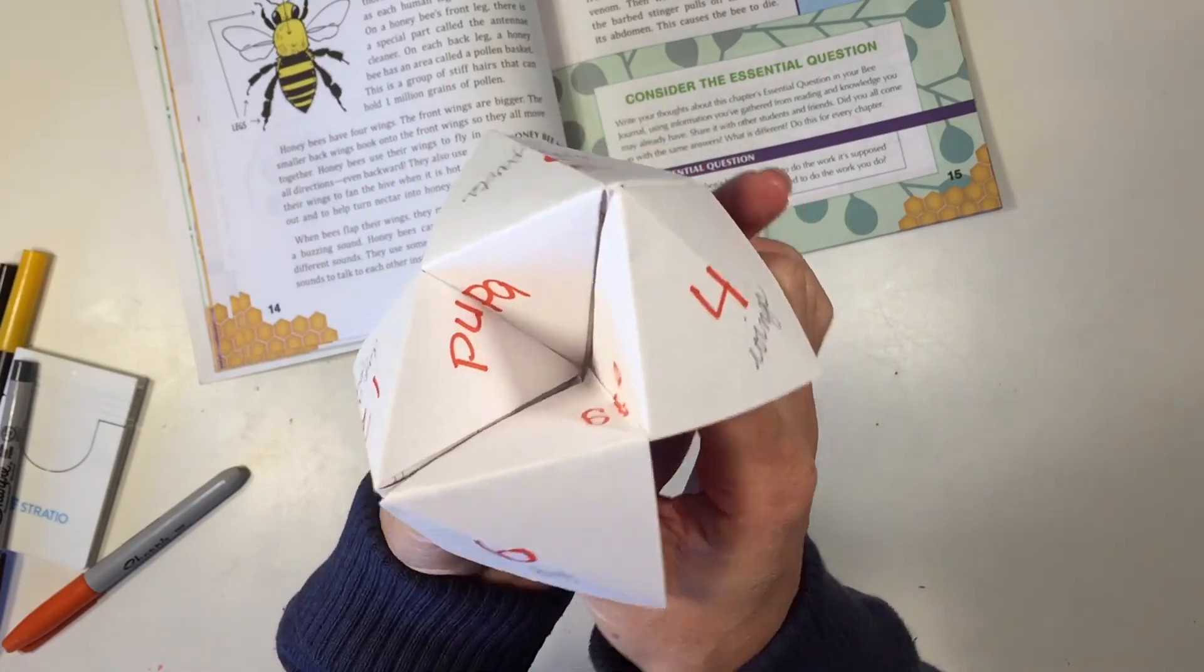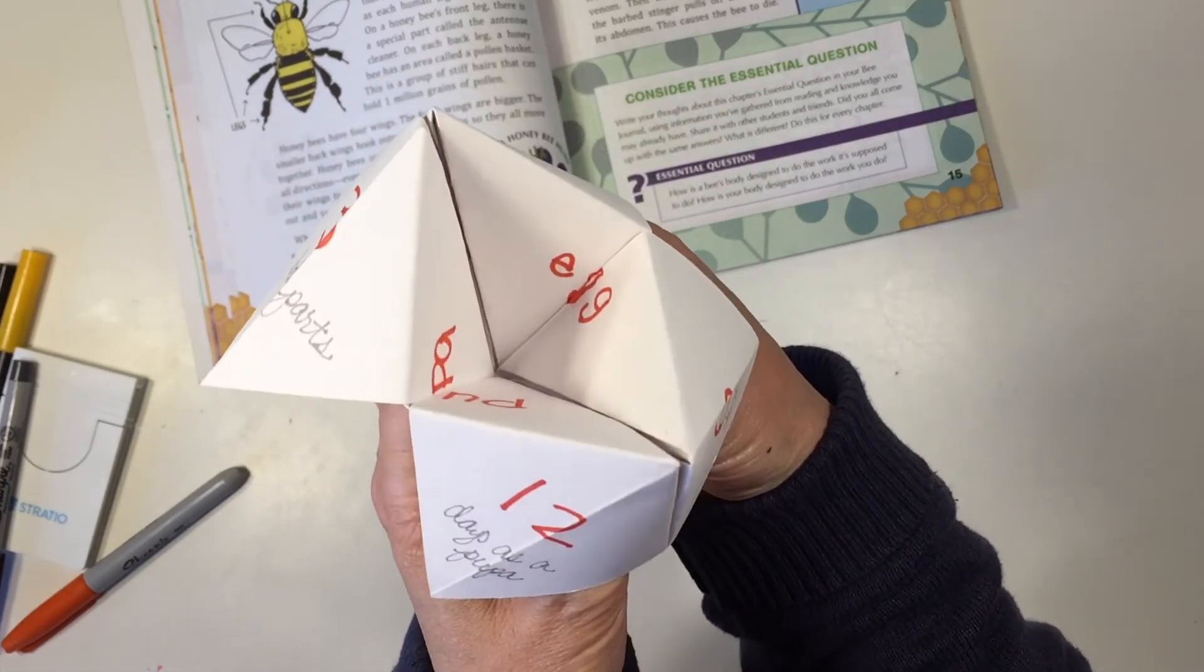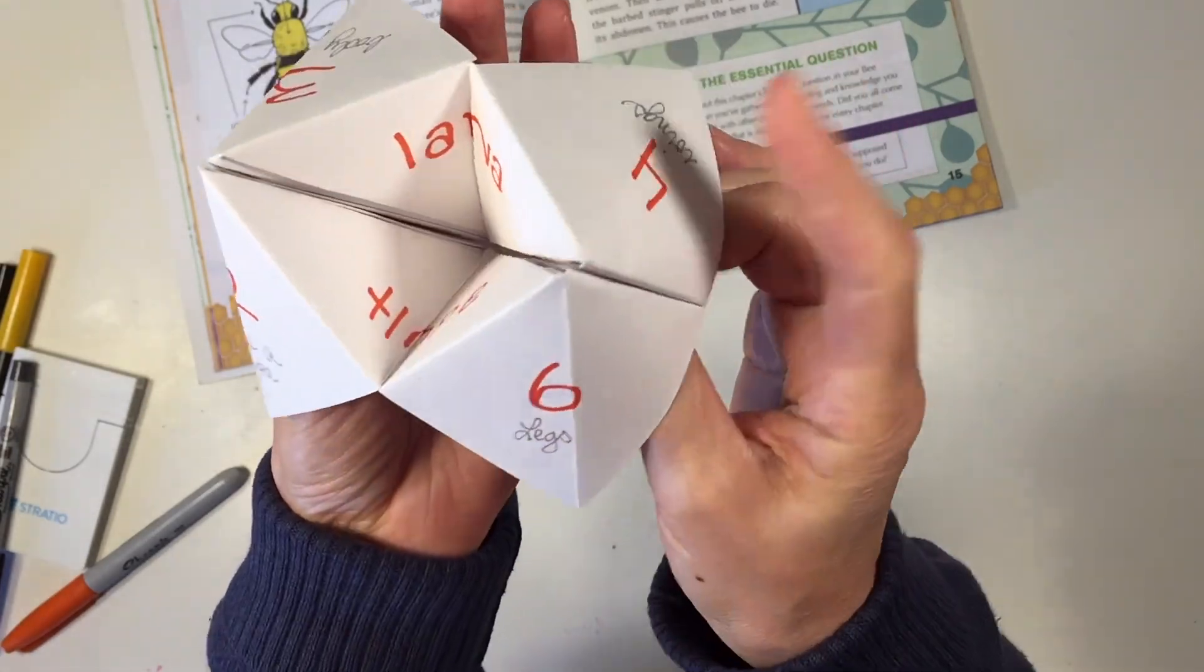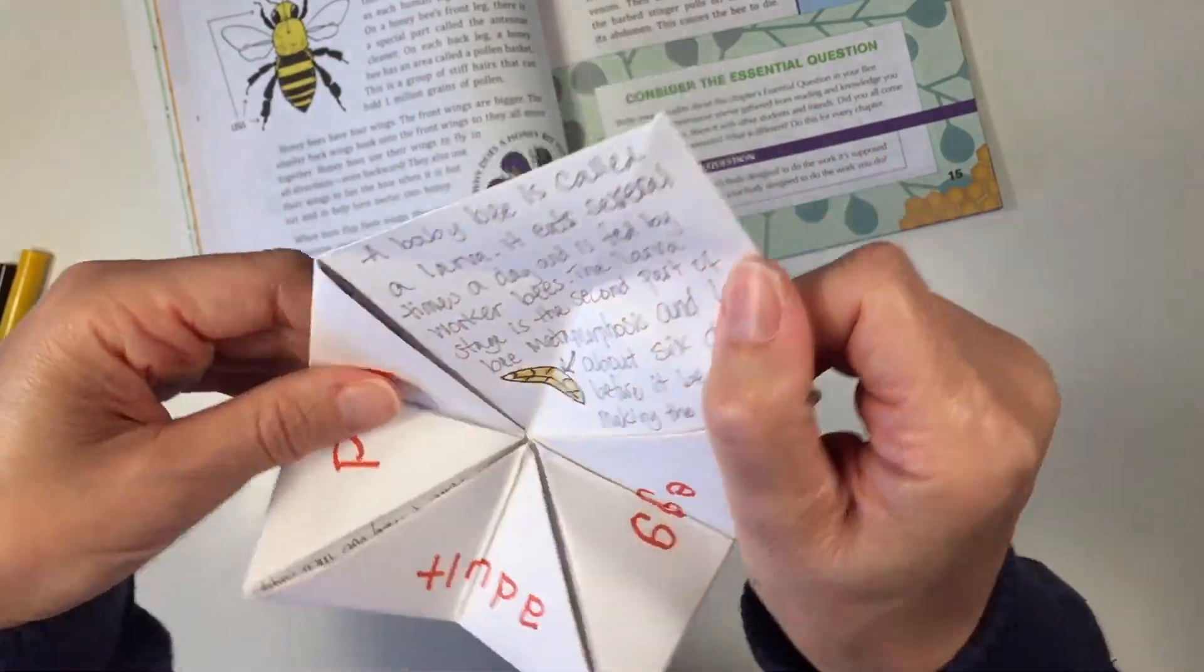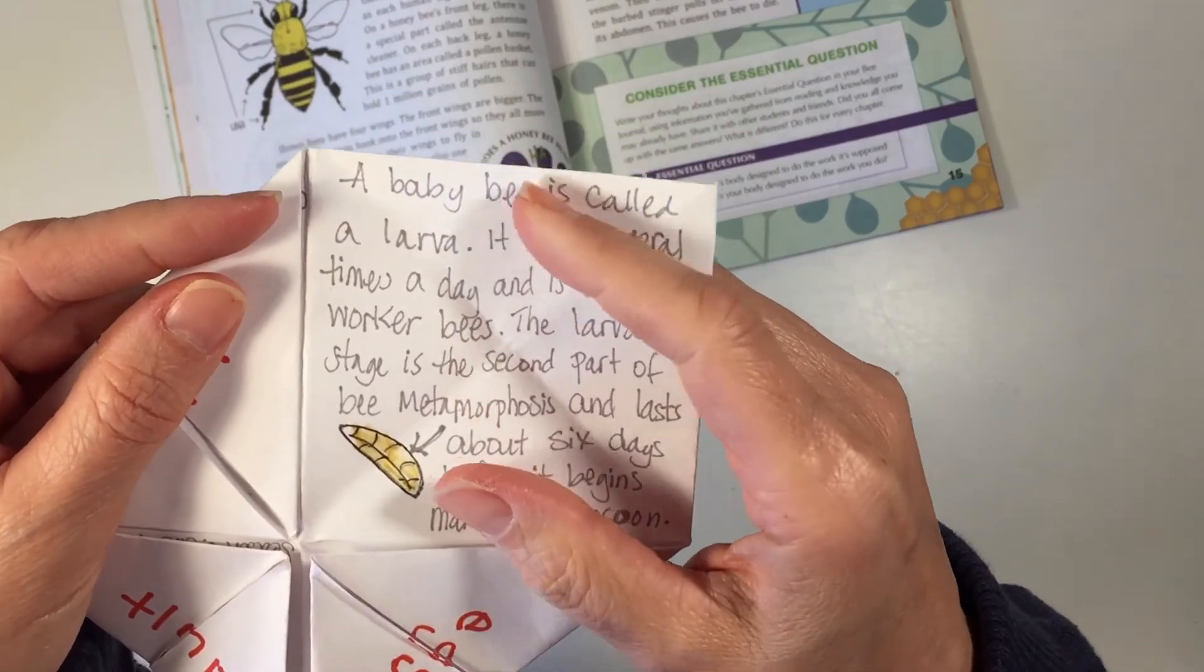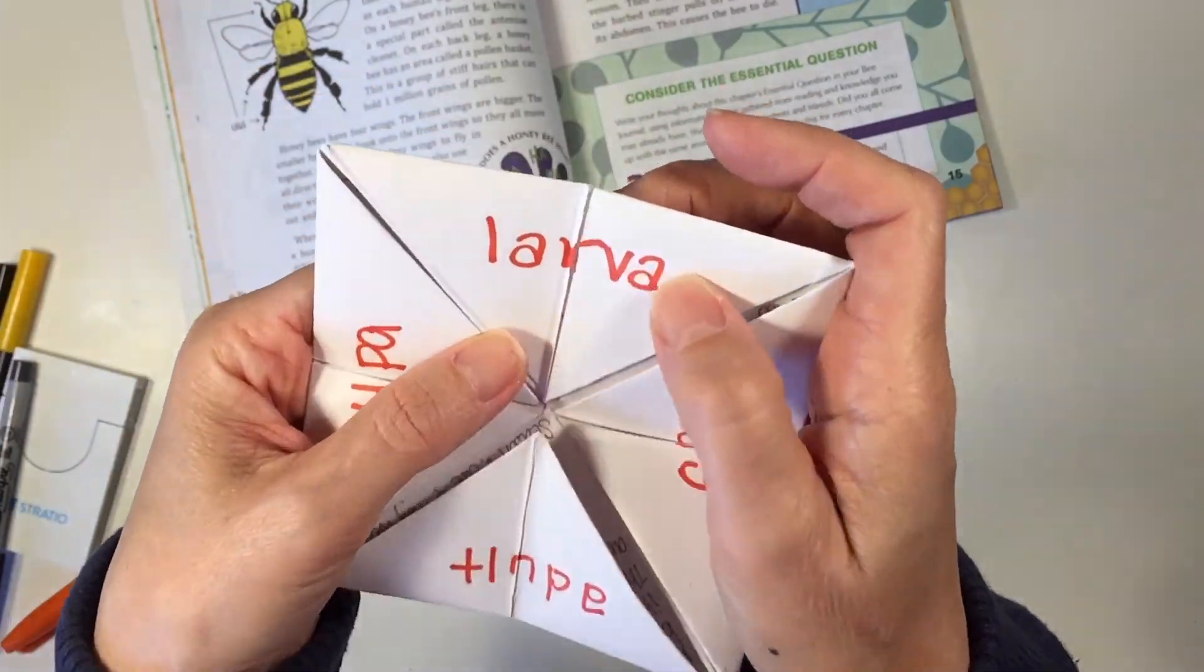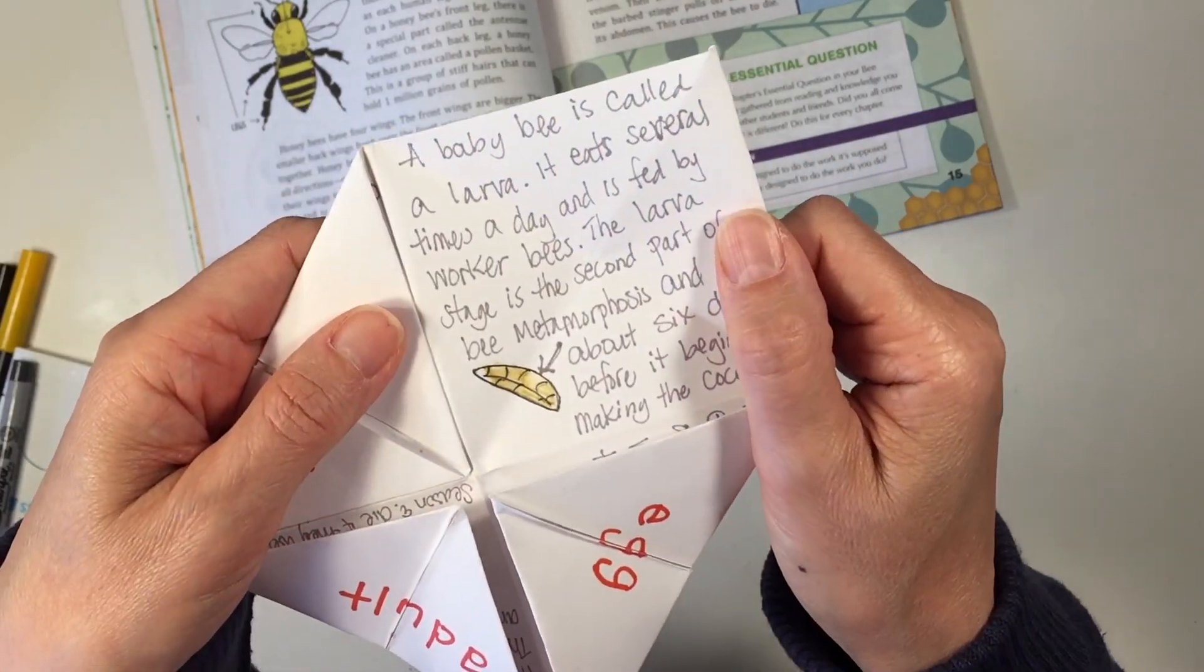Then they can choose either pupa or egg. If they choose egg that has three letters, so then we can go one, two, three. And now they can choose either larva or adult. So let's say they choose larva, and then we can read what it says about the larva, or I can test them and say what do you know about the larva stage of a bee, and then we can check the answer.